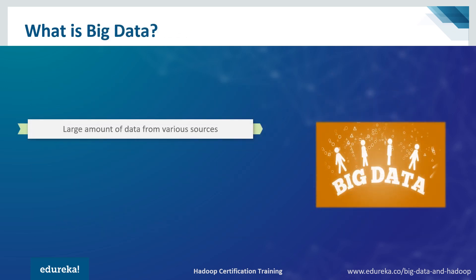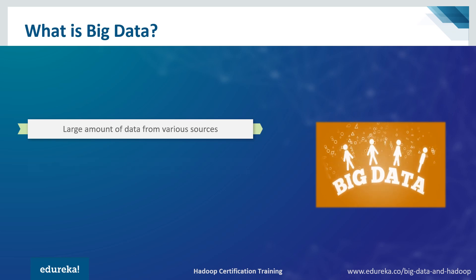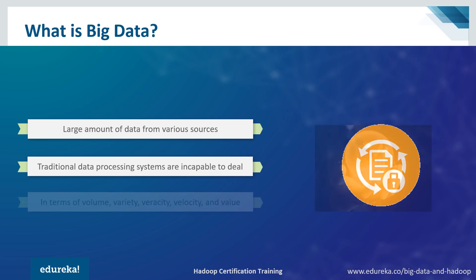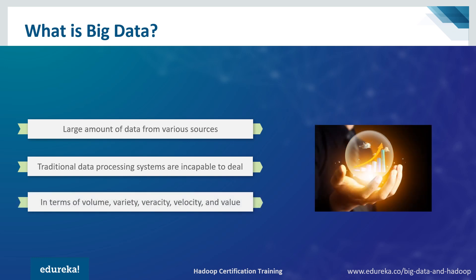Now let's see what is big data. It refers to the large amount of data from various sources and in different formats, like audio files, video files, text files, JPEG, and many more. The traditional data processing systems are incapable of dealing with a huge amount of unstructured data, and it is expressed in terms of five V's: volume, variety, veracity, velocity, and value.